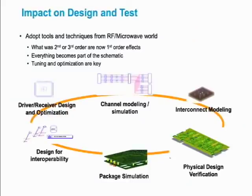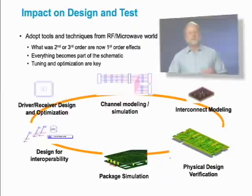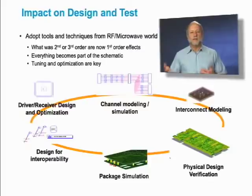Things that used to be second, third, or fourth order effects are now becoming first order effects. In a low-speed design where you hit place and route and everything works, you move to a high-speed design where you have to really worry about balancing lengths on traces. You have to worry about how much noise is in the system. Those things were second order effects in low-speed designs — now they're first order effects.